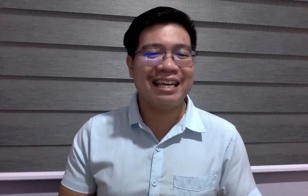We can apply a quicker, complement and alternative method. The complement of the net decimal equivalent is the single discount equivalent. The formula is: 1 minus [(1 minus x₁) multiplied by (1 minus x₂) multiplied by (1 minus x₃)], where x represents the percent discount in the discount series. To further illustrate this, let us have this example.